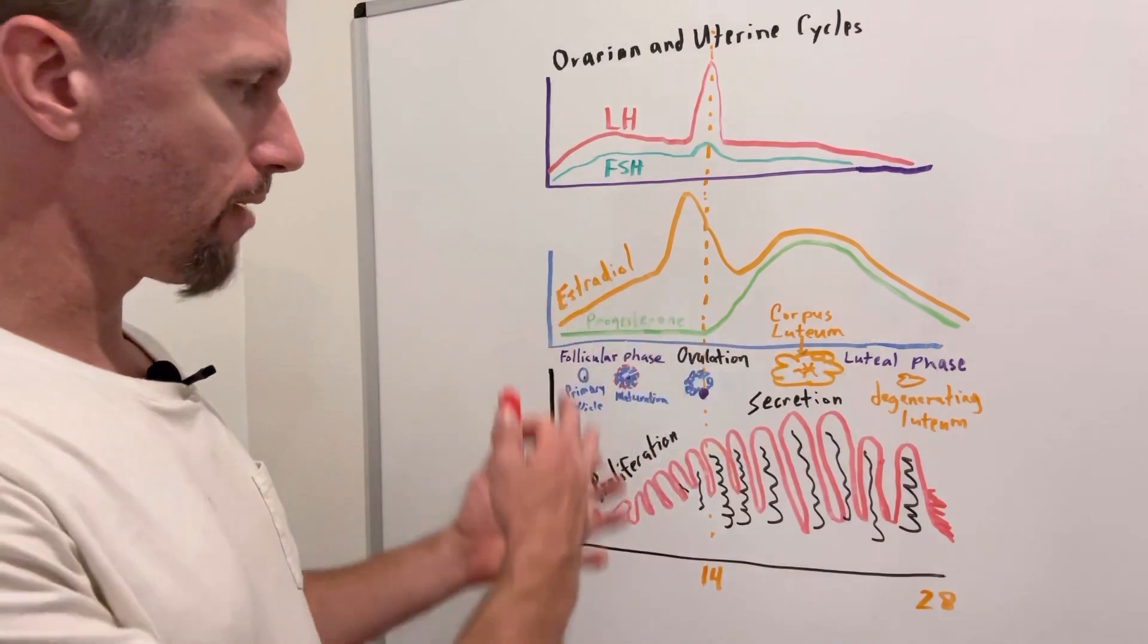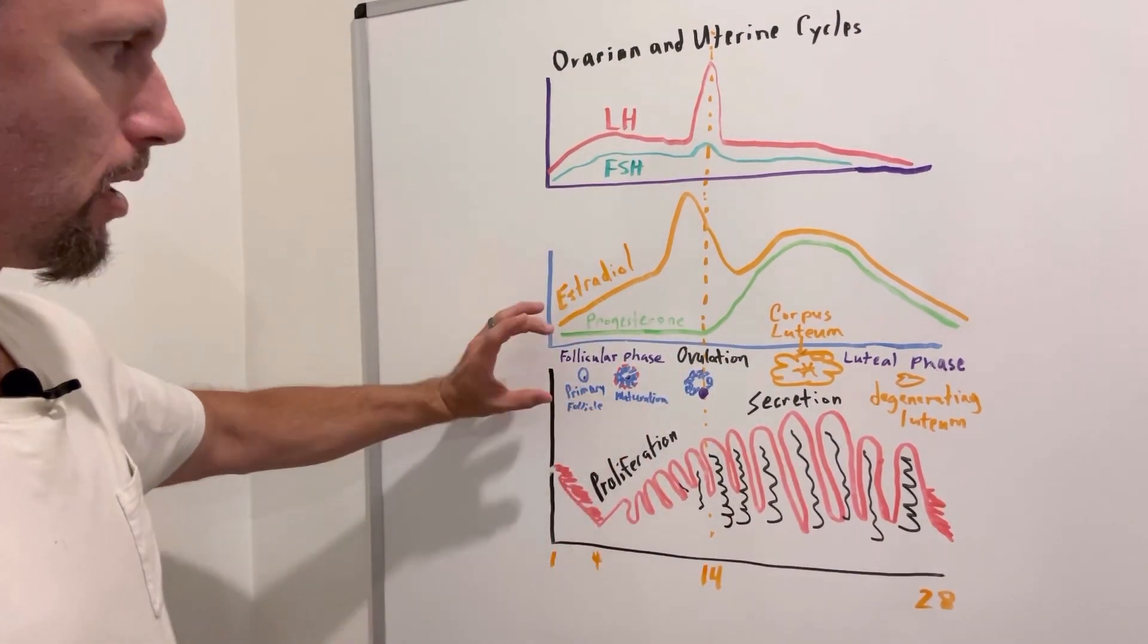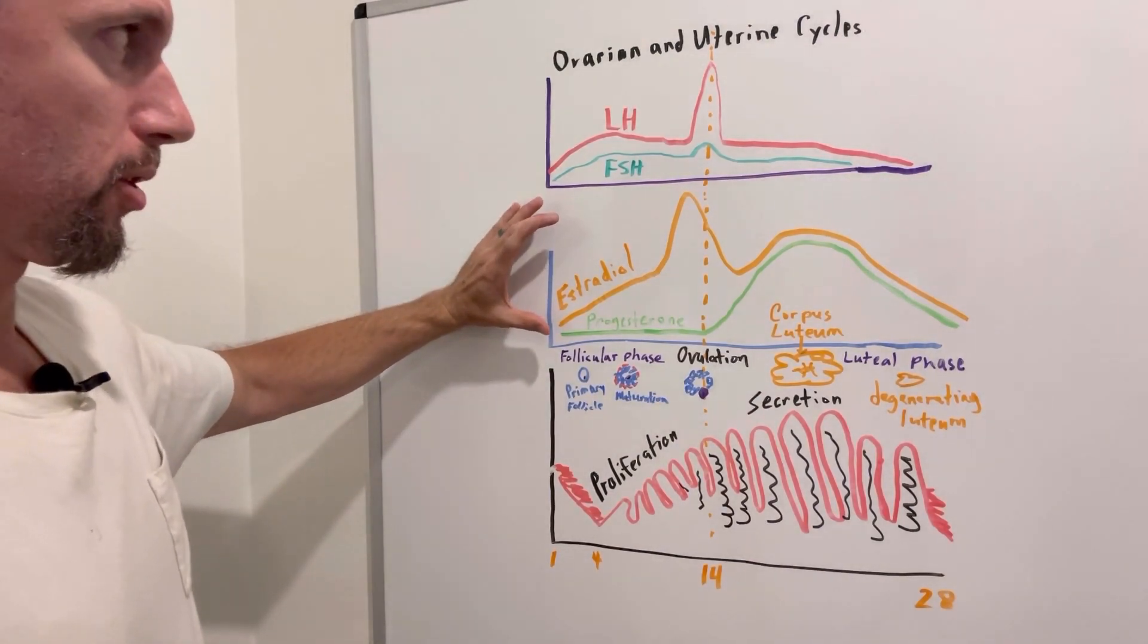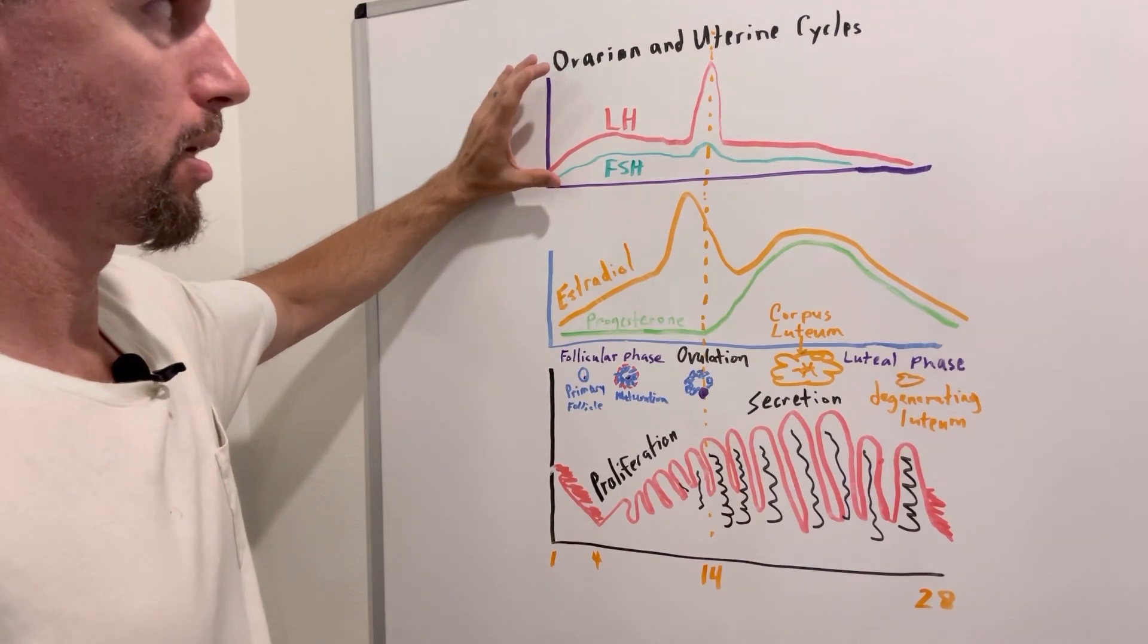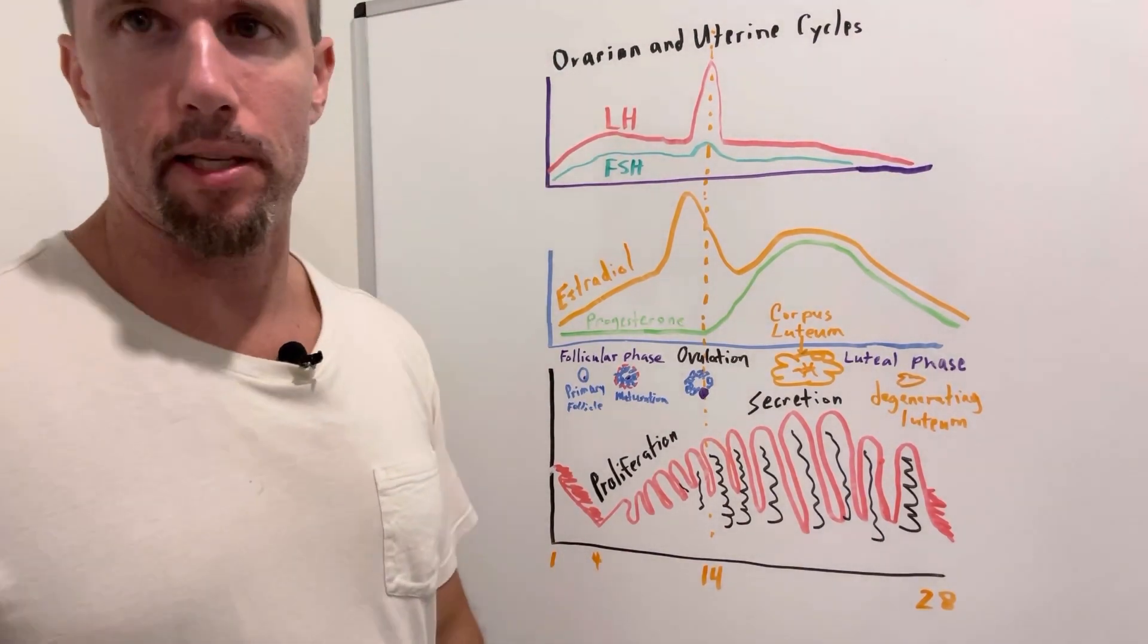And so I know that's kind of convoluted. We have a couple things going on. We have the uterine cycle, the ovarian cycle. We see what the steroid hormones are doing, and then we look at these stimulation hormones up here. So if you need to watch that again, go ahead, and I'll catch you in the next video.